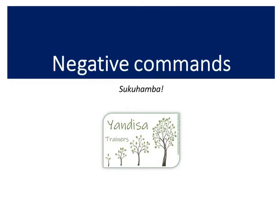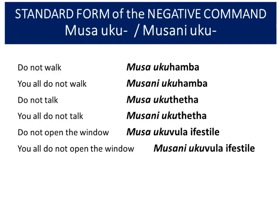10.3: Negative commands. Negative commands are relatively simple. If you remember, in a positive command you simply use the verb without using the subject concord — so for example, if you want to shout 'go' to a dog you would say 'hamba' with nothing attached to the front. For negative commands, there are very specific prefixes, and there's a standard form and a shortened form, similar to English.